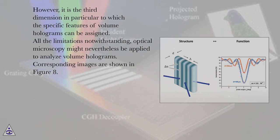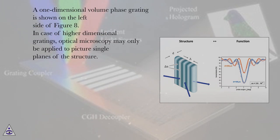Corresponding images are shown in Figure 8. A one-dimensional volume phase grating is shown on the left side of Figure 8. In case of higher dimensional gratings, optical microscopy may only be applied to picture single planes of the structure.